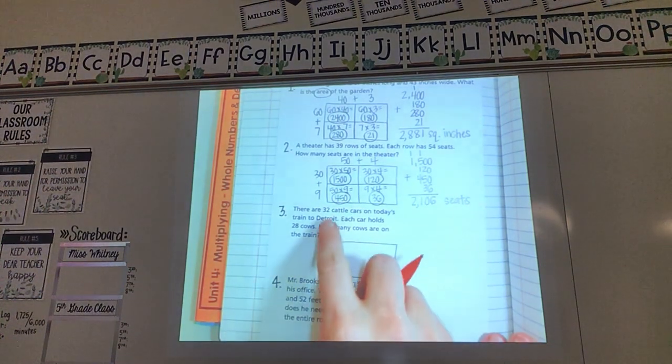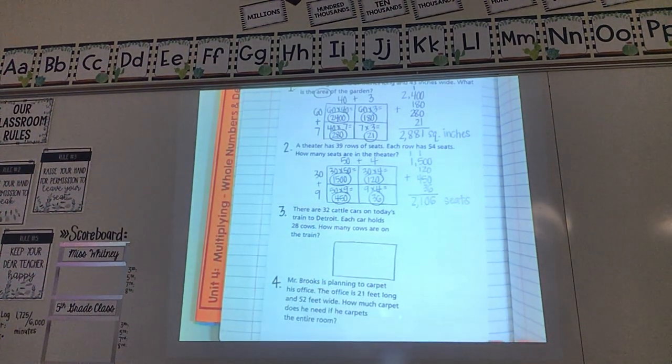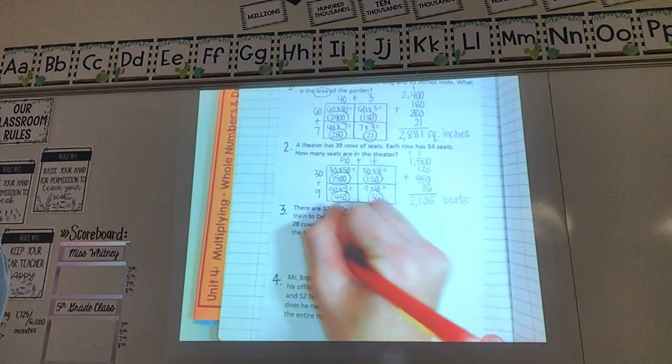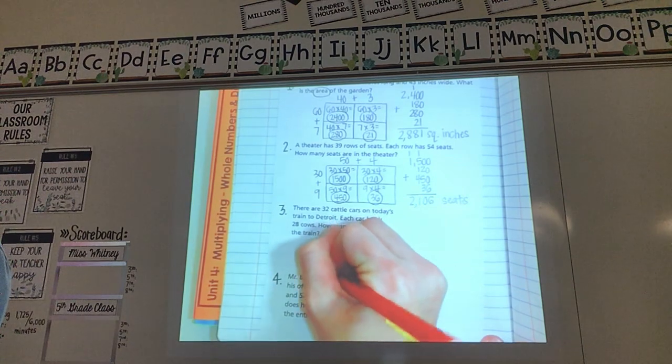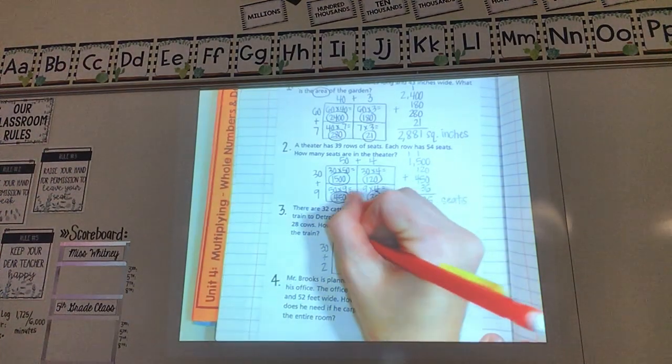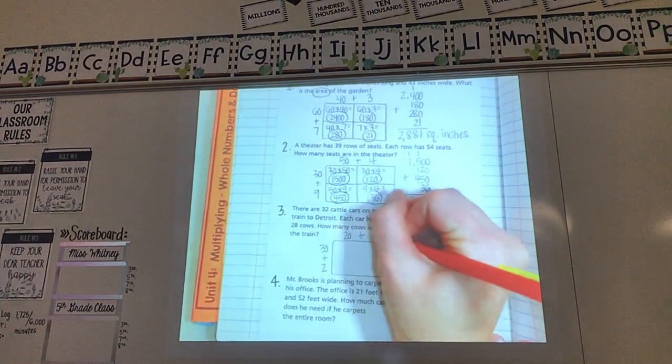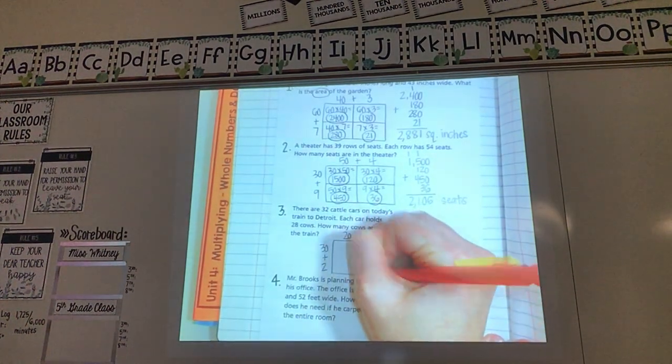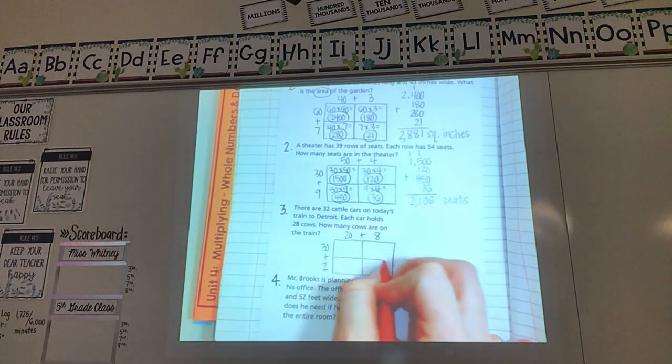So I'm going to draw my box. You should know about how big to draw it now since you know what we're doing again. Reminded yourself. My first number is a 32. I need to break it up for my box. How do I break up 32? 30 plus 2. And then my second number is a 28. How am I going to break up 28? 20 plus 8. What do I do at each of my plus signs? Divide my box. And now I'm ready to go.